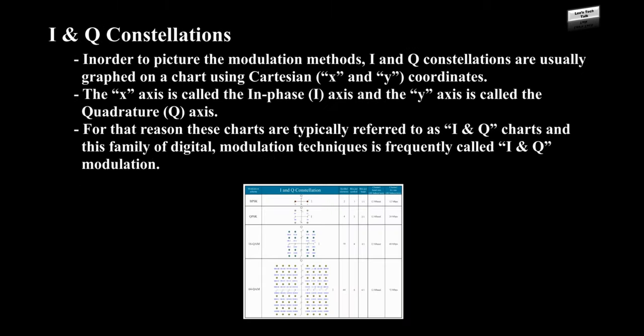I and Q constellations: In order to picture the modulation methods, I and Q constellations are usually graphed on a chart using Cartesian (X and Y) coordinates. The X-axis is called the in-phase, I, axis and the Y-axis is called the quadrature, Q, axis. For that reason, these charts are typically referred to as I and Q charts, and this family of digital modulation techniques is frequently called I and Q modulation.